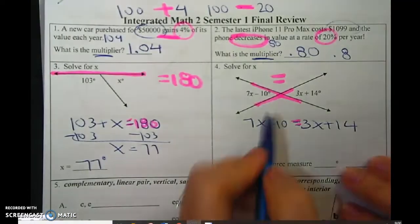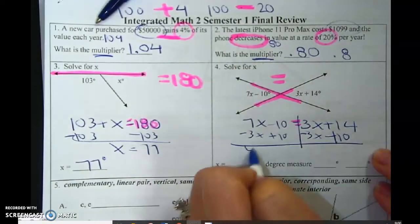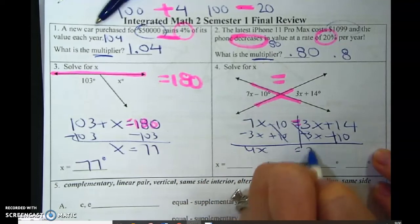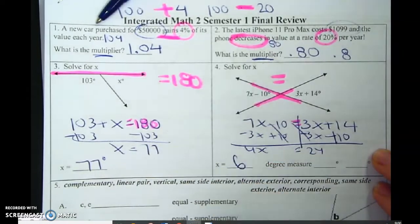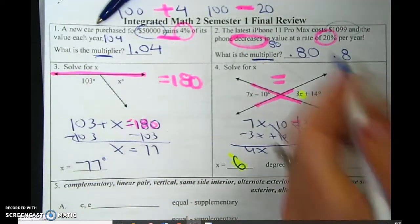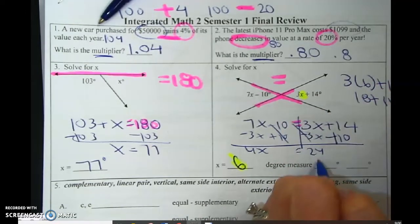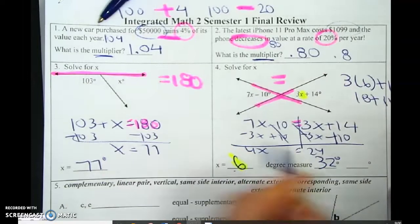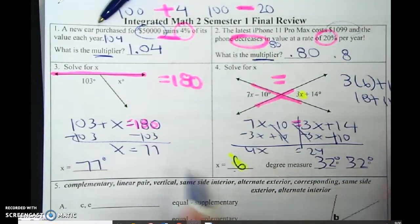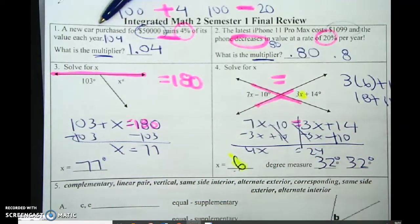12x equals 77. And that's degrees. And then here, move this, move this. 4x equals 24, x equals 6. So now I take the 6, plug it in. And that's 32 degrees. I don't have to plug it in here because I know they are equal. But if you don't believe me, 7 times 6 is 42, 42 minus 10 is 32.